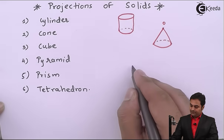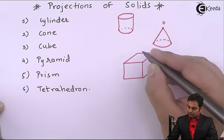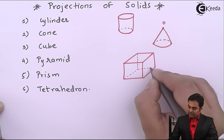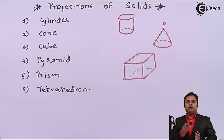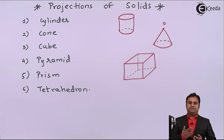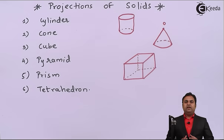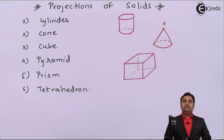Next there is a cube which has all its dimensions equal, that is length, width and height are equal in case of cube. Next, pyramids are of different shapes and they are defined based upon their number of edges of the base. Like there may be a square pyramid having 4 edges at the base, then a pentagonal pyramid having 5 base edges, hexagonal pyramid having 6 base edges, and even octagonal pyramid having 8 base edges.